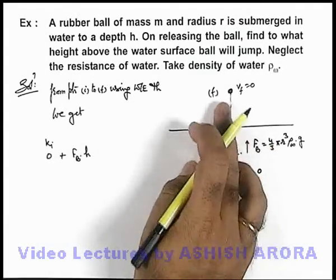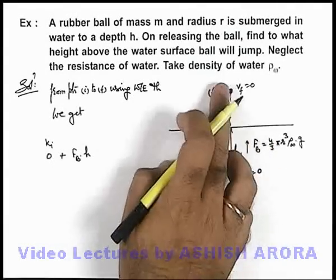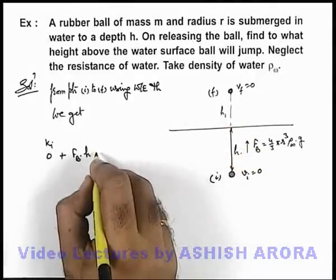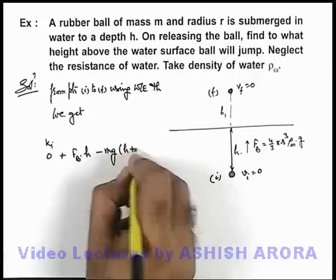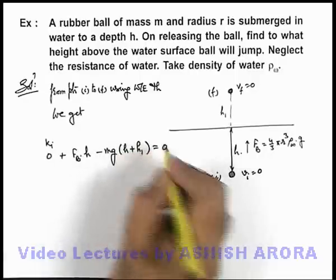Another force acting on the ball from starting to final point is gravity. So the work-energy equation becomes: F_b·h - mg(h + h₁) = 0.